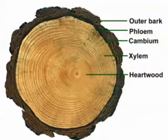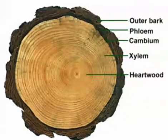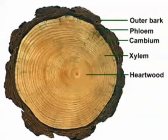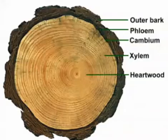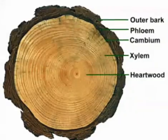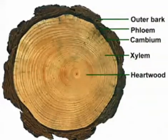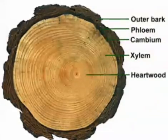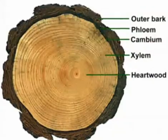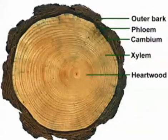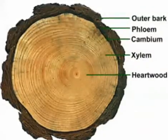Phloem is basically living. It is present inside the bark and it transports food material. Inside the phloem is a cambium, which is a layer of meristematic tissues. It produces phloem outward and xylem inward.